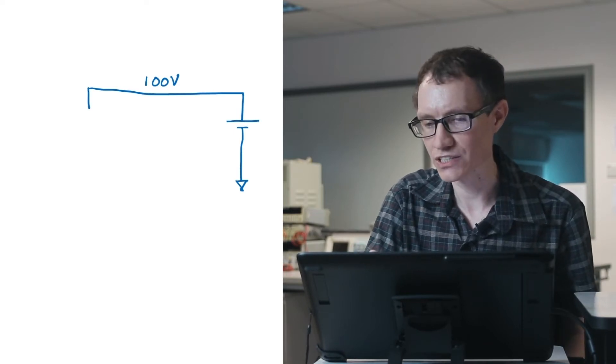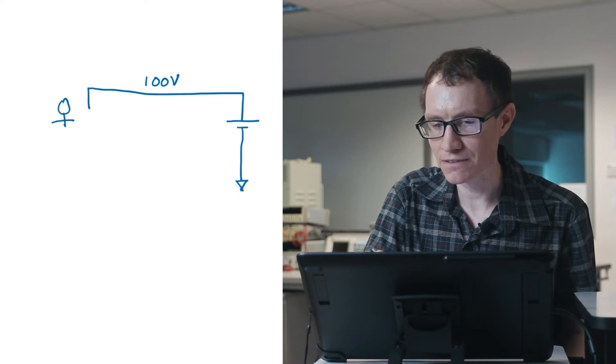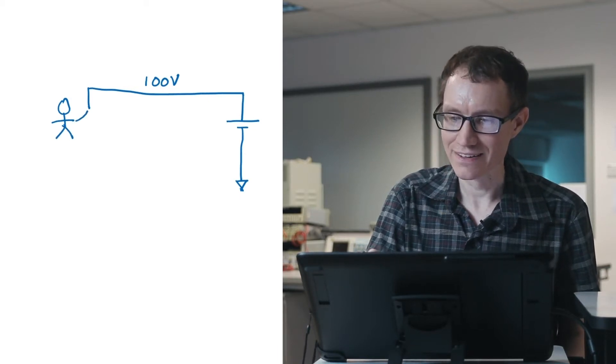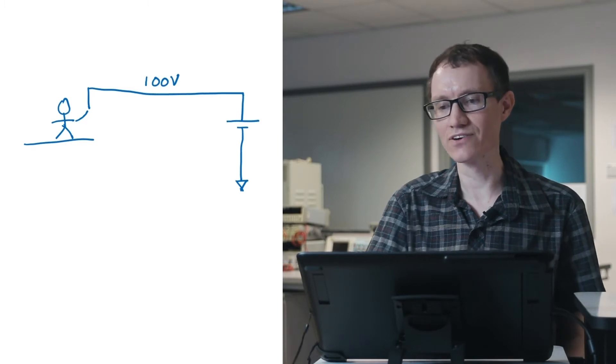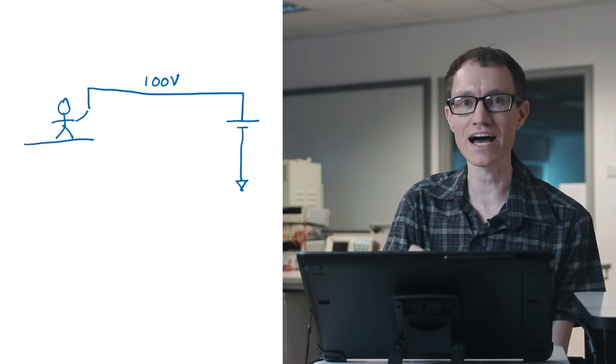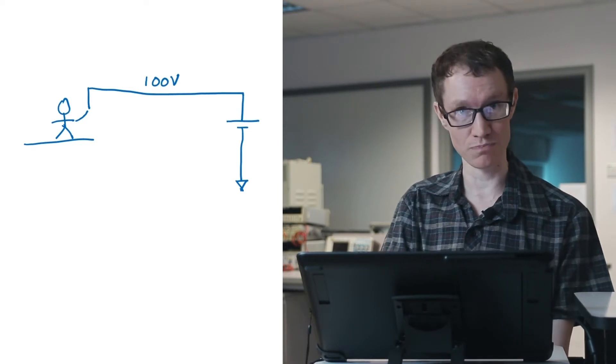We're assuming a DC situation here. And we have a person that touches his hand to the 100 volts, and he is standing on the ground. That would obviously be a very dangerous thing to do, because this is not an example of a floating power supply.